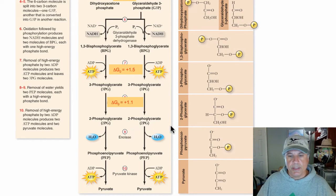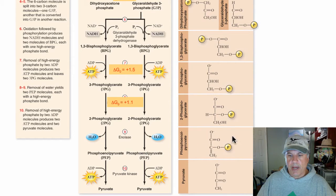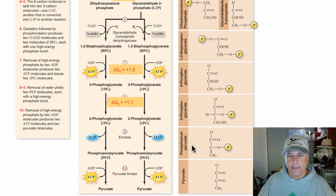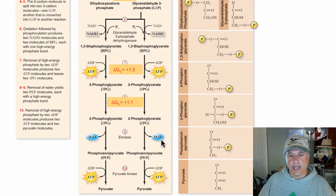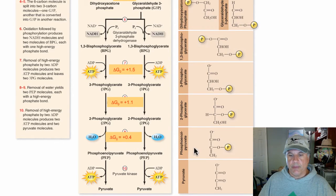Then in step 9 — we're almost done — 2-phosphoglycerate is acted upon by the enzyme enolase to produce phosphoenolpyruvate. All through the energy-yielding phase we are dealing with 3-carbon compounds up until the last step. We still have 3 carbons in our pathway here, and water is produced — so this is a condensation reaction. The delta G is close to 0, just barely positive under standard conditions; in the cell this would be negative.